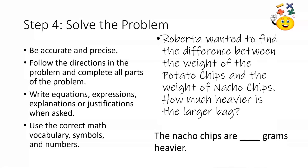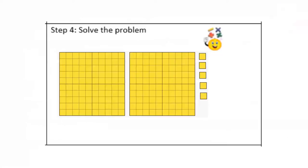So, again, here's our problem. Roberta wanted to find the difference between the weight of the potato chips and the nacho chips. And we want to know how much heavier is the larger bag. We know the nacho chips are larger because 205 is greater than 187. One way we can solve our problem is using a place value model. Remember, we are solving 205 the weight of the nacho chips minus 187 the weight of the potato chips. My place value model shows the weight of the nacho chips to help me get started. Now, I'm going to subtract 100 by crossing out that big hundreds flat. That takes care of this one in the hundreds place from the potato chips.